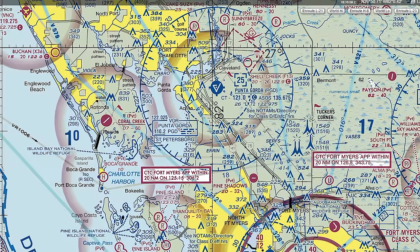Coming back to Venice, the CTAF frequency is 122.725. There's no control tower in Venice, so it's 122.725 all day and all night long. At Punta Gorda there's an ASOS — an automated surface observation station — for weather information, on frequency 135.675. You would dial that frequency into your COM radio, typically on the left side of the panel, to either talk to the tower or listen to the ASOS.